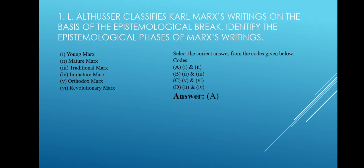First question: Louis Althusser classifies Karl Marx's writings on the basis of the epistemological break. Identify the epistemological phases of Marx's writings. Options: Young Marx, Mature Marx, Traditional Marx, Immature Marx, Orthodox Marx, Revolutionary Marx.